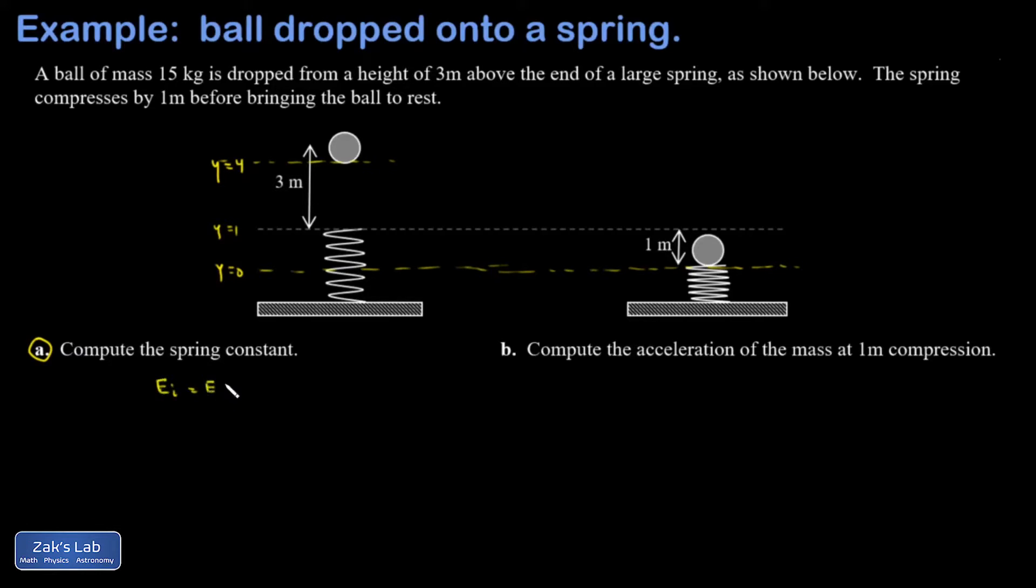So I have E_initial equals E_final. All my energy in the initial state is gravitational potential energy, so that's mgy_initial. In my final state the gravitational potential energy is all gone because I'm sitting at y equals 0, and all of my energy is spring potential energy.